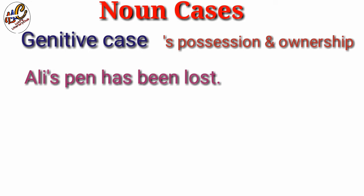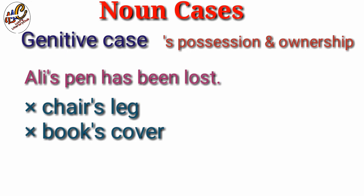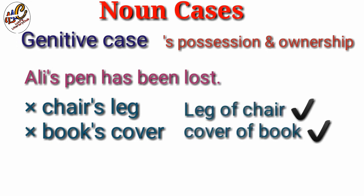It is important to add something for clearer understanding of possessive case. Since Ali is the name of a living being, we can put apostrophe 's' with living beings. But we cannot put apostrophe 's' with non-living things. We don't say 'chair's leg' as it is wrong. For non-living things, we put possession using 'of': we say 'leg of chair,' not 'chair's leg'; 'cover of book,' not 'book's cover.' There are various other uses of possessive case — I'll make a separate video on those.